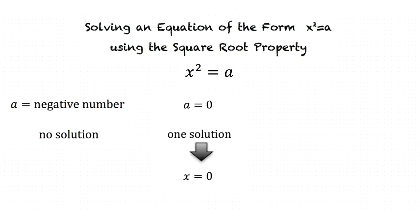When a is 0 the equation will have one solution which is x is equal to 0. When a is positive the equation will have two solutions. One of them will be x is equal to positive square root of a and the other one will be x is equal to negative square root of a.